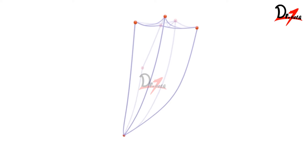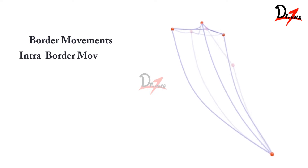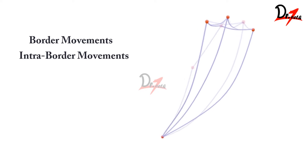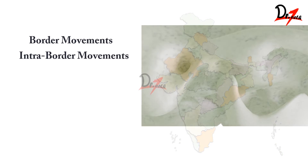Mandibular movements can be divided into border movements and intra-border movements. What are border movements? Let us take an example. I am from India, so I have my confines within India — unless I have a passport and a visa. That border of India is my border, so my movement is limited till the border of my country. That is the extreme movement I can make. That is a border movement.